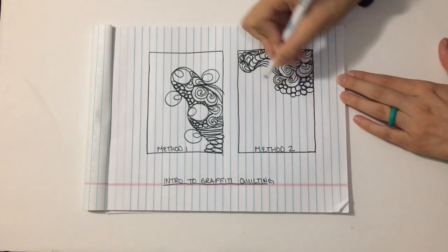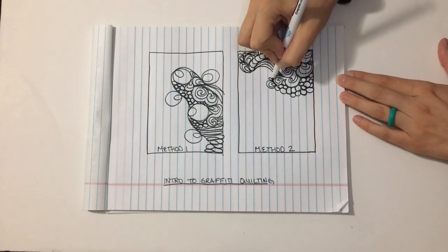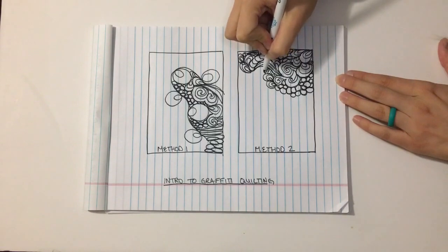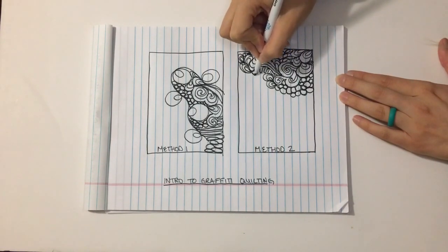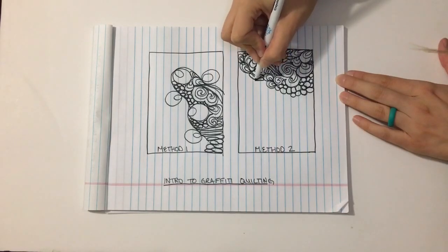Once you have a few designs under your belt that you can jump in to graffiti quilting, you don't need to wait until you have an enormous personal library of shapes. You just repeat the same shapes over and over again in different and funky ways. But practice by drawing so you don't have to be worried about how it might turn out on your quilt.